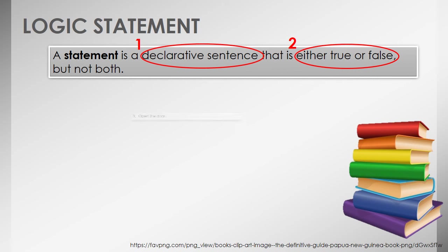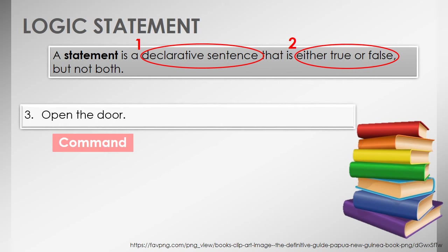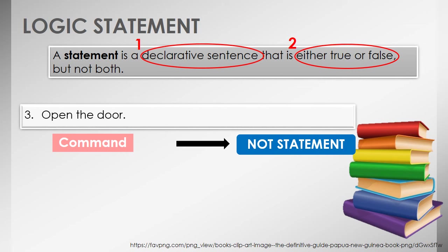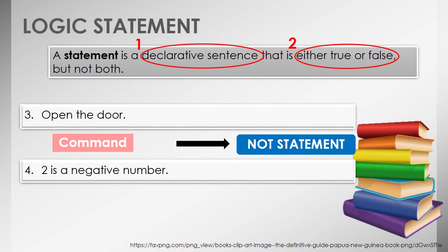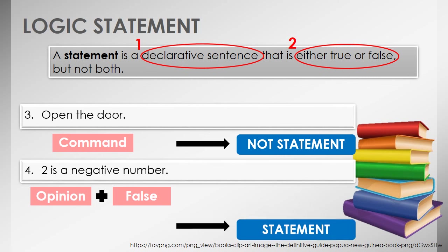Moving on to the fourth example: '2 is a negative number.' This states an opinion, therefore it is a declarative sentence. Since we all know that 2 is a positive integer and not a negative integer, this sentence is false. Since both conditions are satisfied, this is a statement. For the next example, we analyzed the nature of a statement involving x. When x is 4, the equality is true; but when x is not 4, the equality is false. Hence, the statement can either be true or false depending on the given value for x, and since the conditions are satisfied, this is also a statement.